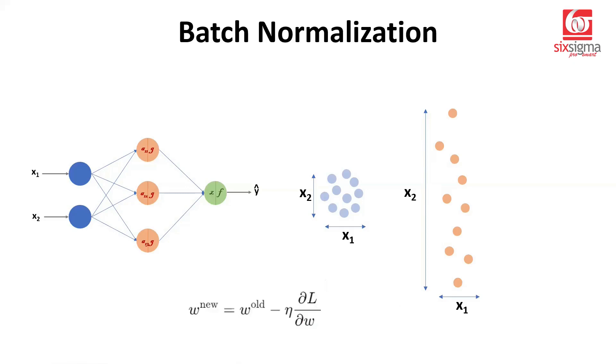At times, that even leads to exploding or vanishing gradients because a feature which has a high magnitude tends to have gradients that vary a lot compared to a feature which is concentrated. So overall, in neural networks, it's a common practice to have the inputs normalized. That's a given.